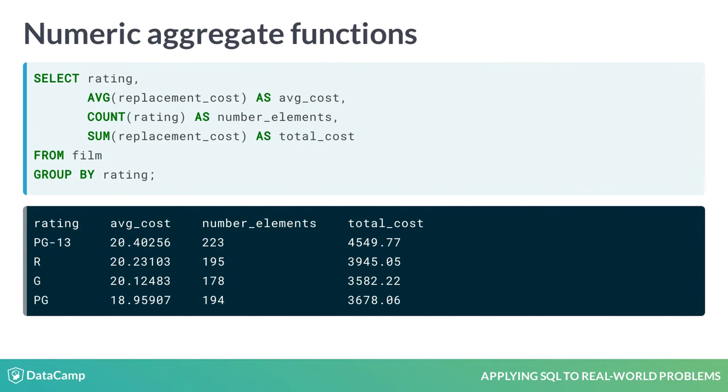In this query, the three aggregate functions are used to generate the average cost, the number of elements, and the total replacement cost for each film rating.